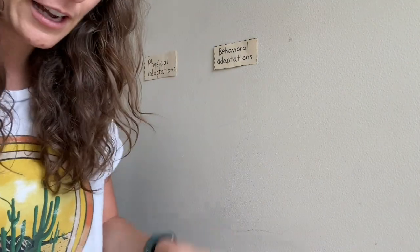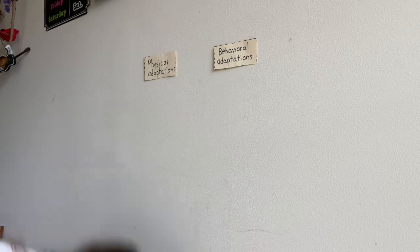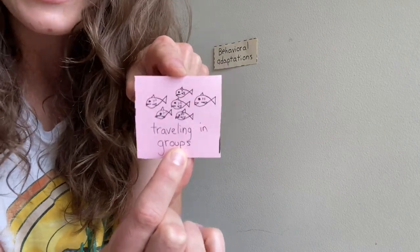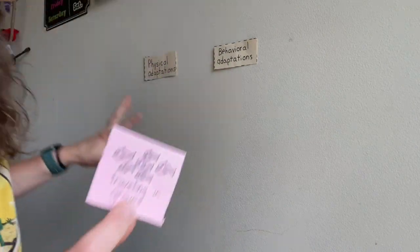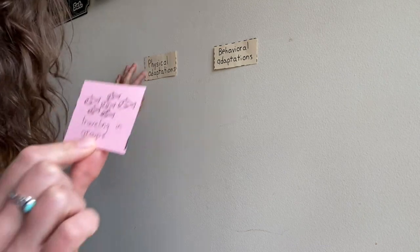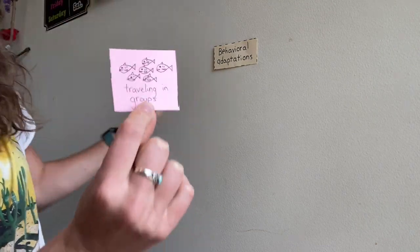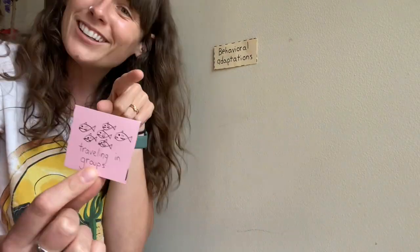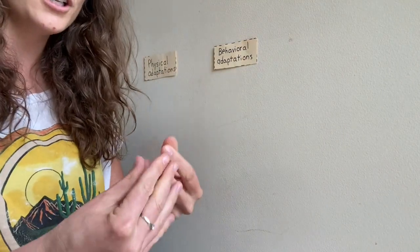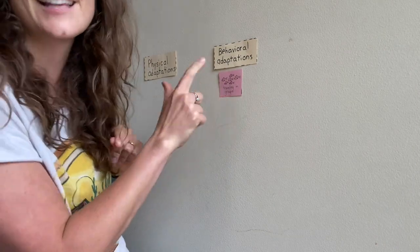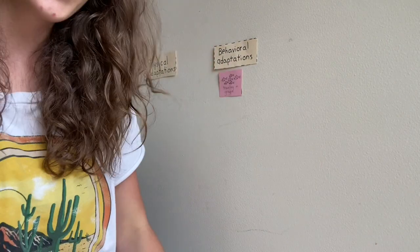I'm going to start with this one — traveling in groups. If you guys see this picture, you'll see that it is a group of fish. So is traveling in groups a physical adaptation — like a fin or a part of their body — or is it a behavior? If you said it's something they do and it's a behavior, then you were right. So we're going to put that right under behavioral, because that's something they do.